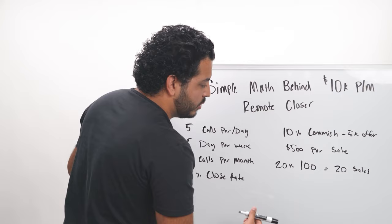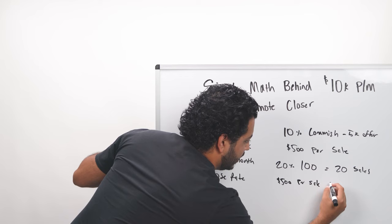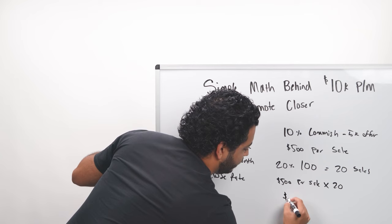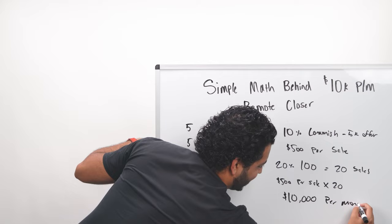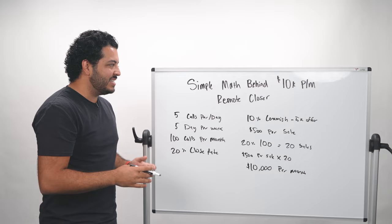So we take that $500 per sale times the 20 sales, and that is going to come out to $10,000 per month. Sorry guys, I'm like bending over to try to write down those numbers. So again, this is the very simple math behind how you can make $10,000 per month.